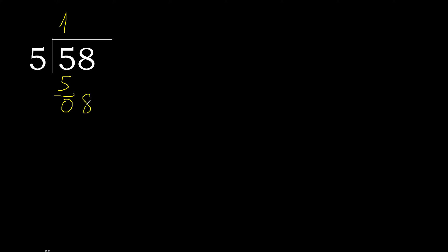Next, bring down — eliminate 0 on this side. 8. 5 multiplied by 2 is 10, which is greater. Multiply by 1 is 5, which is not greater. 8 minus 5 is 3.